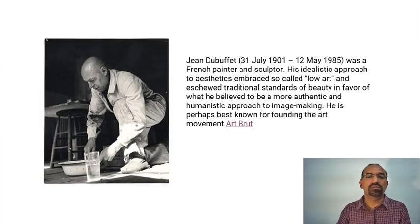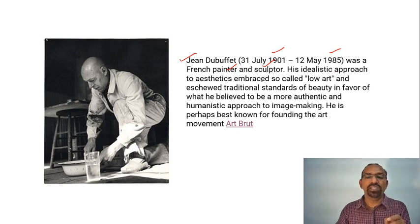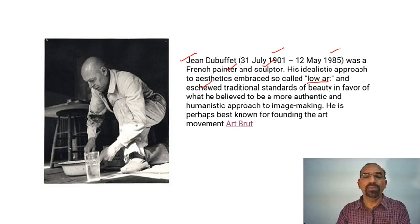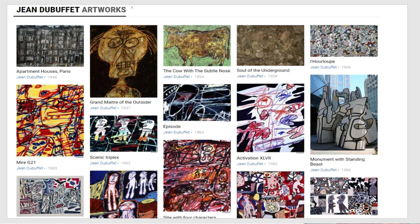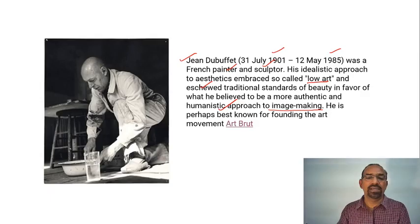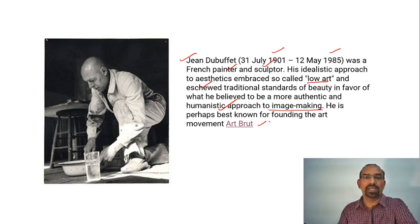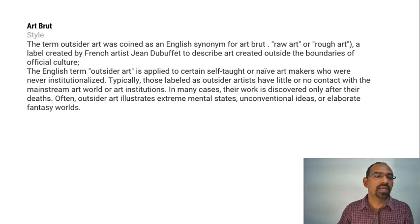Jean Dubuffet was born in 1901 and died in 1985 — a French painter and sculptor. His idealistic approach to aesthetics embraced so-called low art and skewed traditional standards of beauty in favor of what he believed to be a more authentic and humanistic approach to image making. He gave a new dimension to the images he created, and he is perhaps best known for founding the art movement art brut.